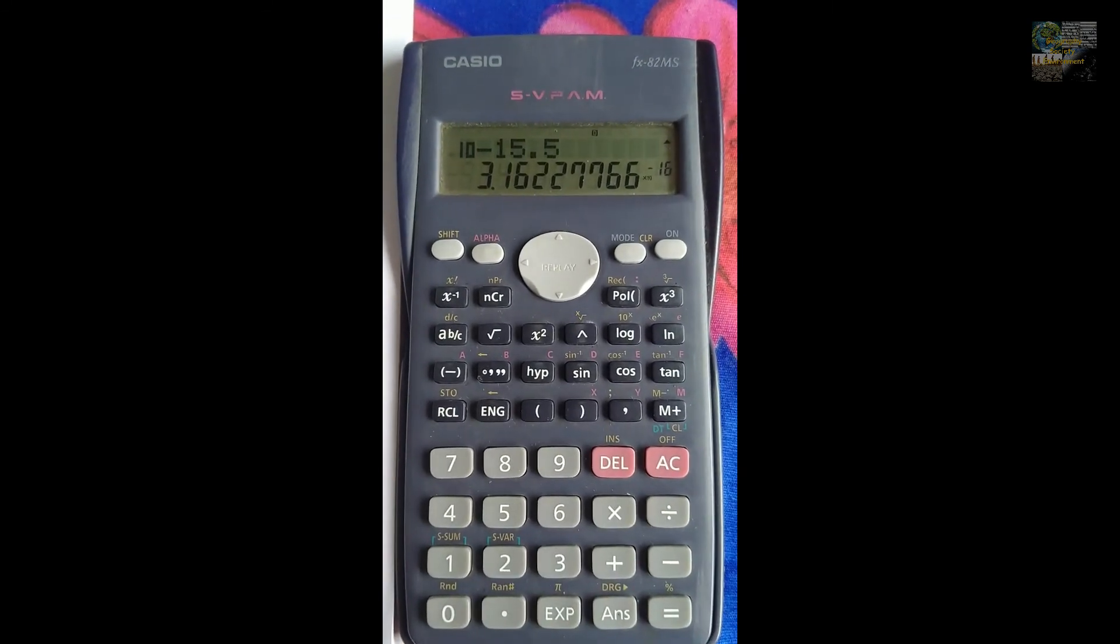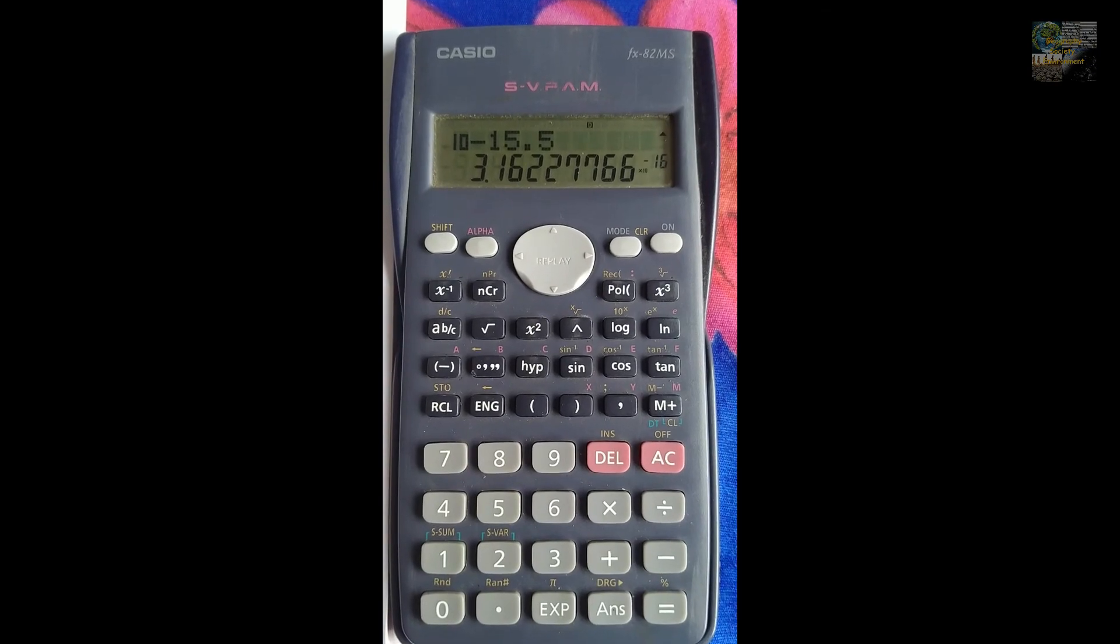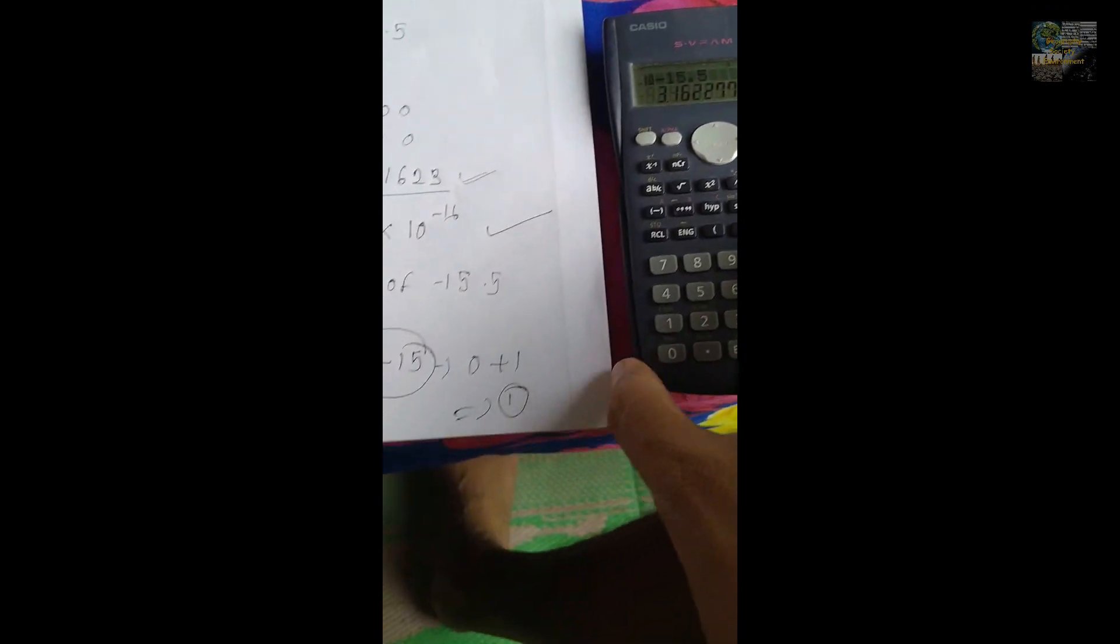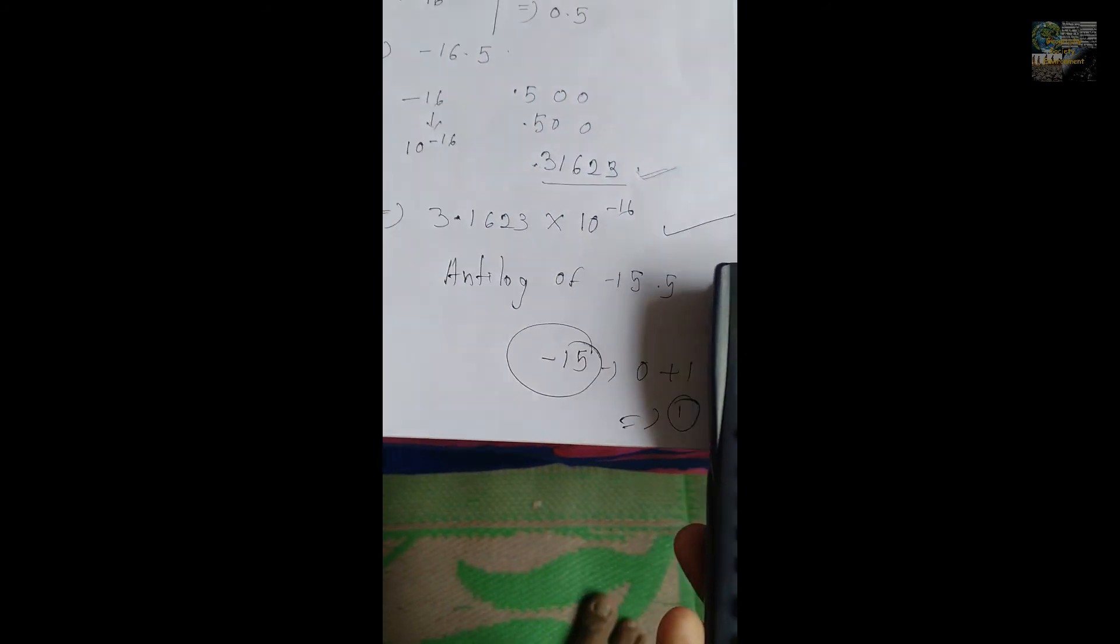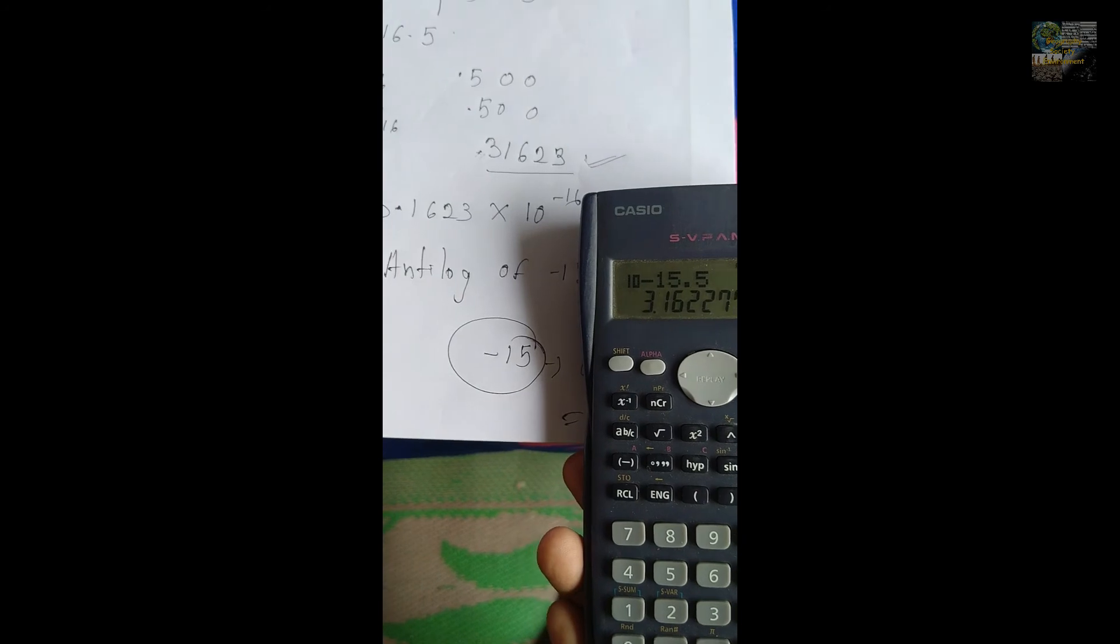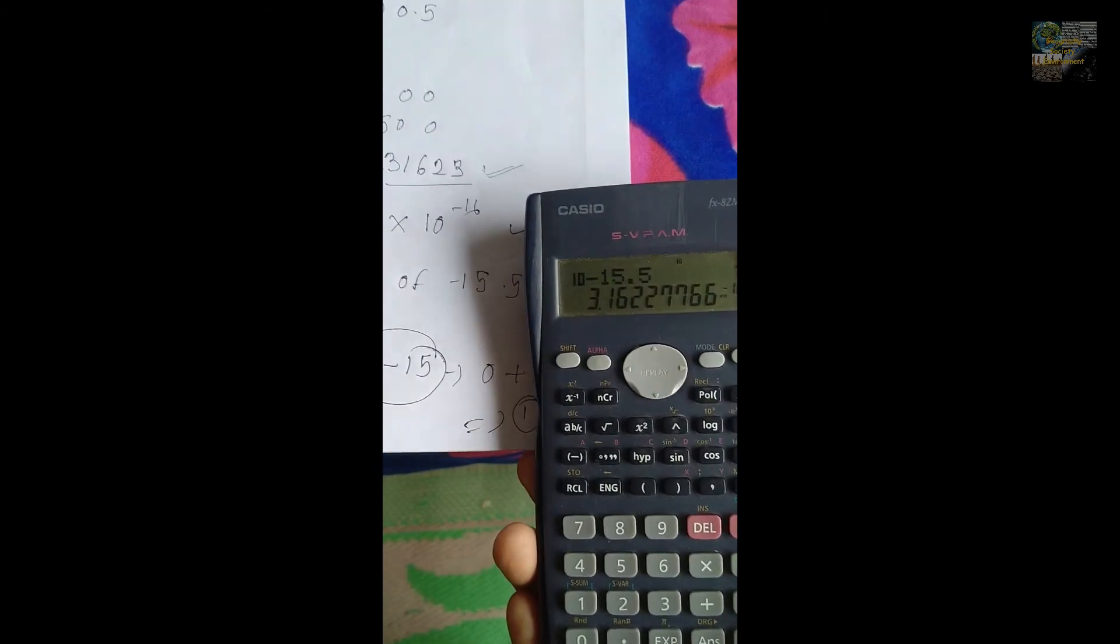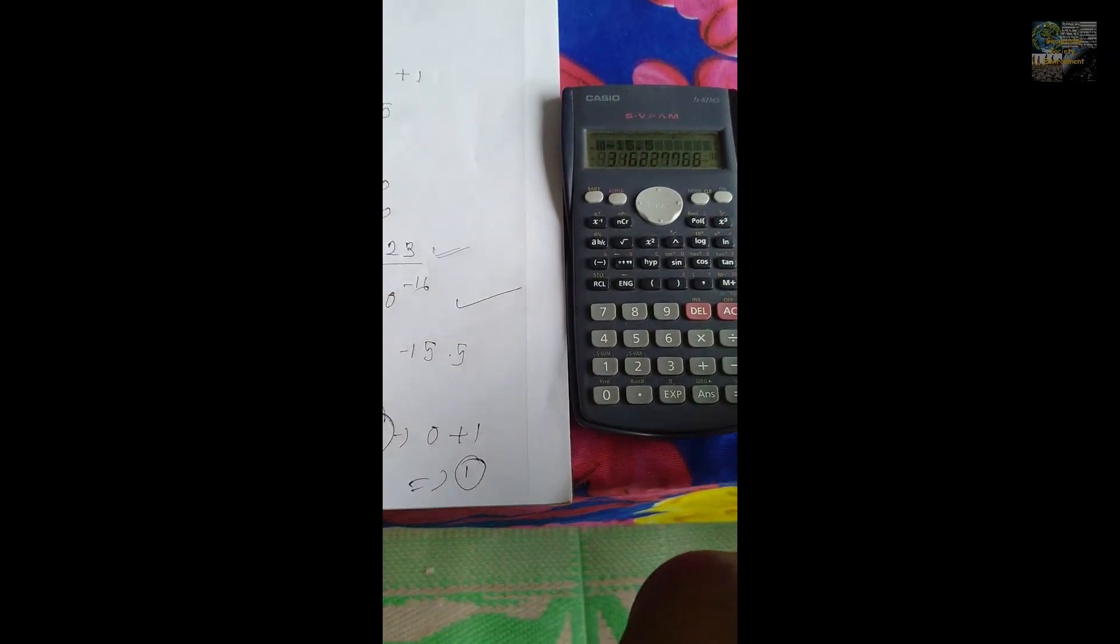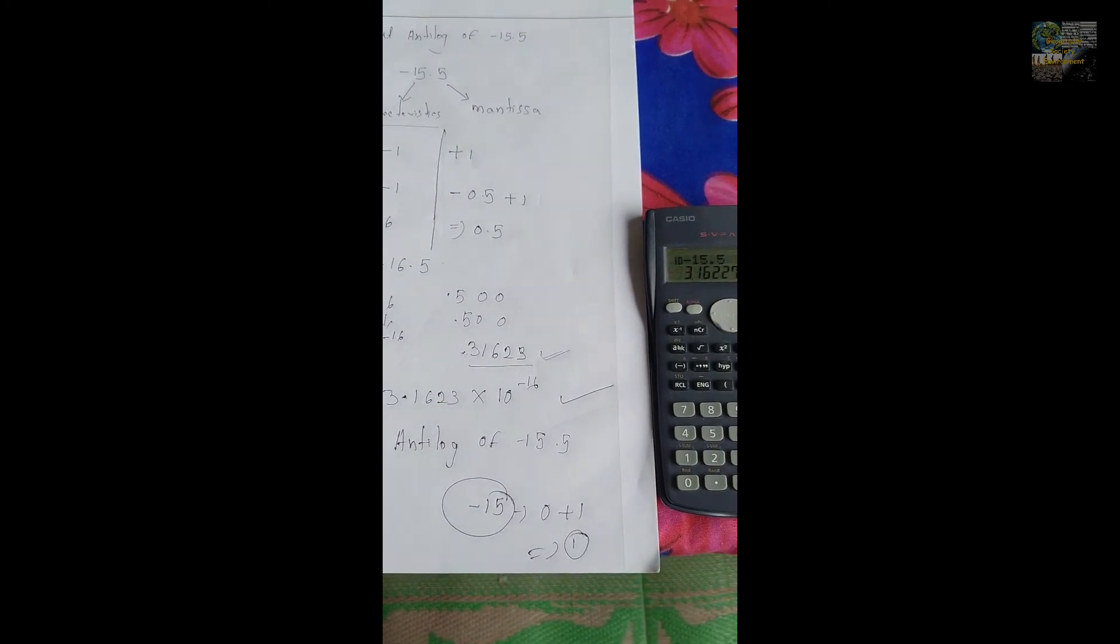You can see that the answer is 3.162227766 into 10 to the power minus 16. I am going to relate and check this answer with my answer. You can see that 3.1623 into 10 to the power minus 16. The computed answer and this method is relevant. It is correlated and adjusted with the scientific calculator.